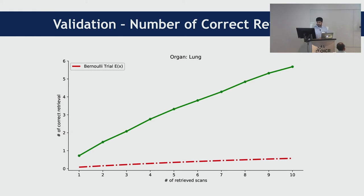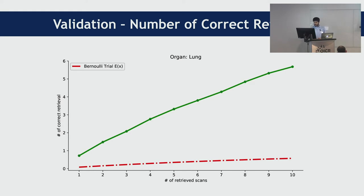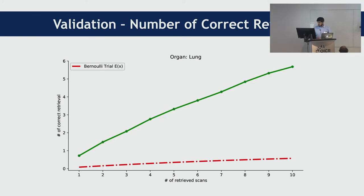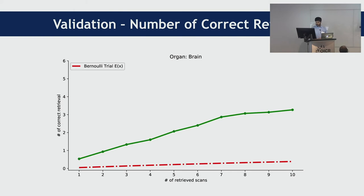We also validated how many correct retrievals we get. If we search for just one scan, how many correct results do we get? The x-axis shows the number of queries made and the y-axis shows how many correct results we got. For lung, if we search for 10 results, we get around 5.5 correct on average — about five lung cases in those 10 retrievals. The red graph shows what a random pick inside our dataset would give, and clearly there is a high discrepancy between our systematic search versus random retrieval. Similarly for brain, searching for brain returned around three brains in a horizontal search, while random retrieval was effectively zero.